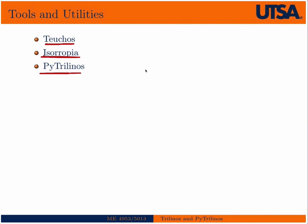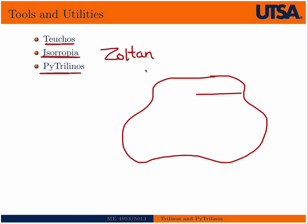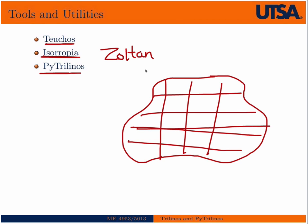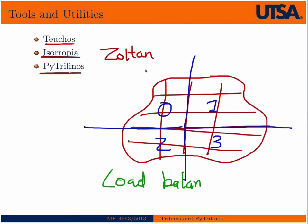Isorropia is an Epetra wrapper to Zoltan. Zoltan has been around a long time, and it's a load balancing tool. What Zoltan will do, if you have a body that's say a finite element mesh, Zoltan will then partition that body into equal partitions such that these partitions can be sent to different processors in an equal way for the job. This is called load balancing.